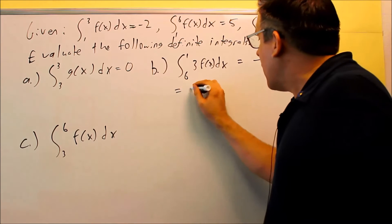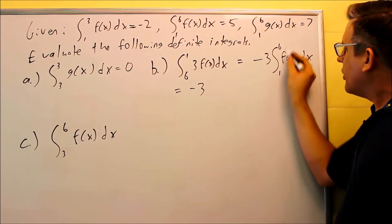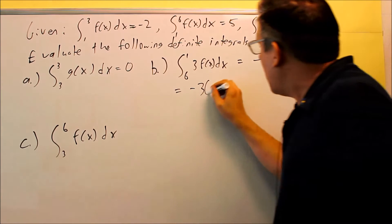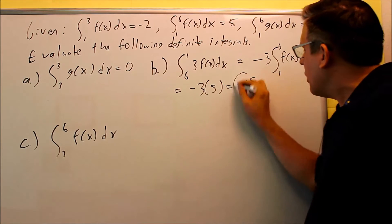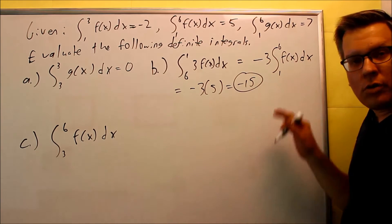That allows me now to plug in a number for this, so from one to six f of x dx, I know that's exactly equal to five, therefore negative fifteen here is going to be the answer for part b.